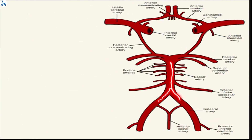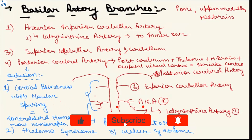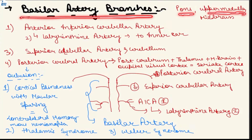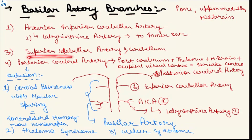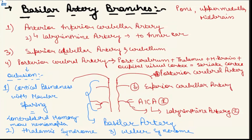When the vertebral arteries join to form the basilar artery, the basilar artery first gives the anterior inferior cerebellar artery (AICA), which in turn gives the labyrinthine artery supplying the inner ear. The basilar artery as a whole supplies the pons, upper medulla, and midbrain. It also gives the superior cerebellar artery supplying the cerebellum, and the posterior cerebral artery supplying the posterior cerebrum, thalamus, midbrain, and occipital visual cortex (striate cortex).